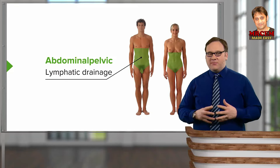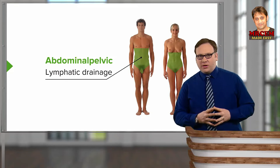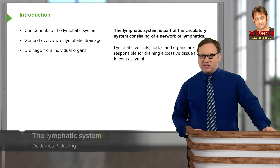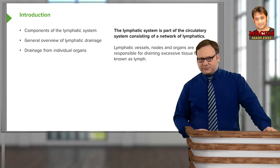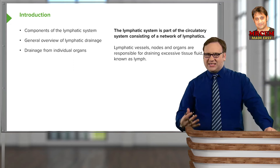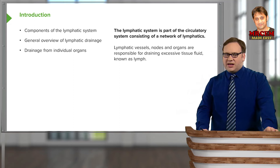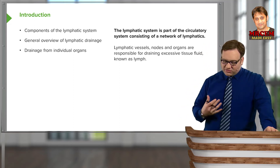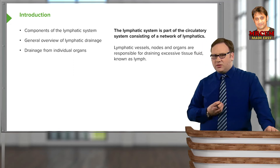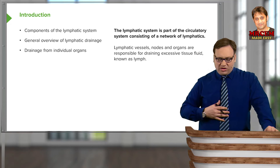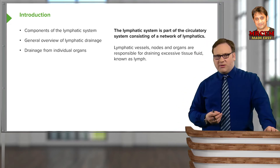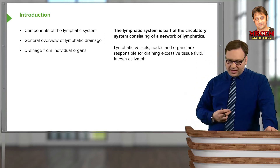In this lecture, we're going to look at the lymphatic drainage of the abdominopelvic organs. I haven't really mentioned the lymphatic system throughout the lectures so far, and I wanted to deal with it just in one lecture. Each of the organs that we've spoken about will have a specific lymphatic drainage. The lymphatic system is actually part of the circulatory system, and it consists of a network of lymphatic vessels, nodes, and lymphatic organs like the spleen, responsible for draining excessive tissue fluid, which is known as lymph. We'll have a look at the basic components of the lymphatic system briefly first, and then a general overview of the lymphatic drainage before picking up individual organs.